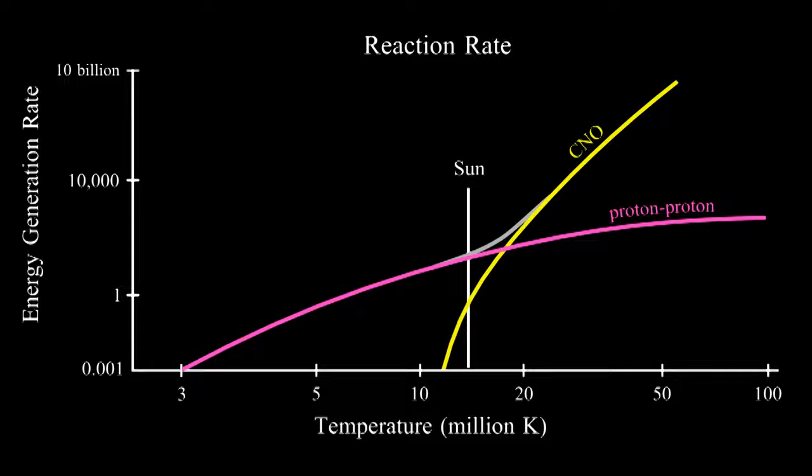As temperature goes up, the rate of both these reactions increase, but CNO increases faster. The CNO cycle becomes the main reaction for any star that's 50% heavier than the sun.